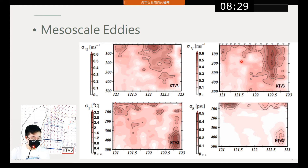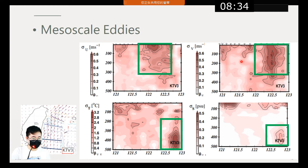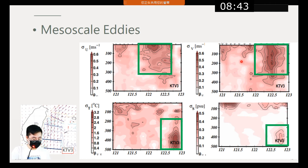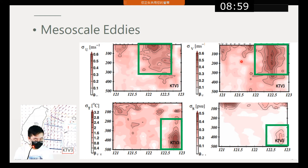We can see that most of the large standard deviation values are located at 122 to 123 degrees east longitude. This is because eddies influence the structure of the ocean — when eddies contact the Kuroshio Current, both velocity, salinity, and temperature change. In this figure, the high standard deviation represents eddy influence, and it causes another velocity maximum at the east flank of the Kuroshio.